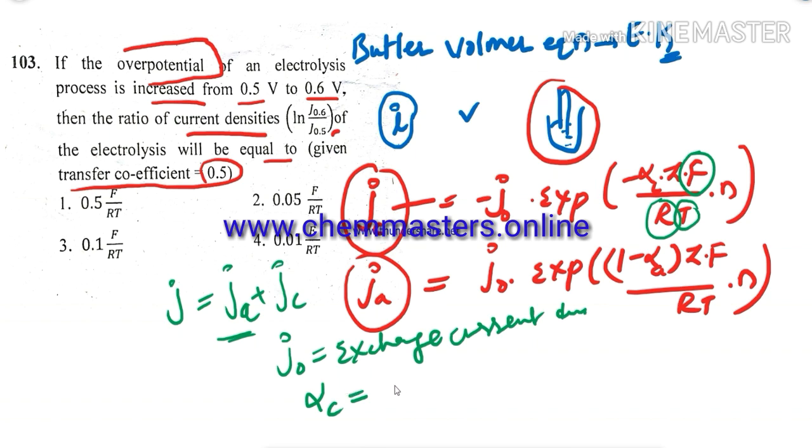So here alpha C indicating that cathodic, just write down cathodic charge transfer coefficient. And what is alpha A? Simply anodic charge transfer coefficient. Then what is eta?